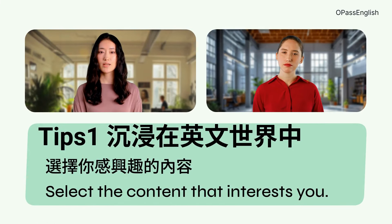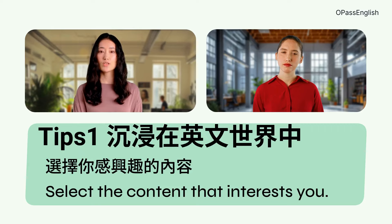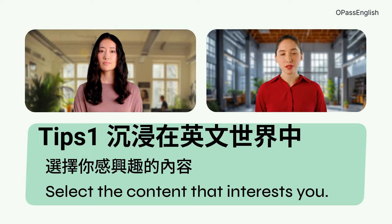Tip 1: 沉浸在英文世界中,你可以从手边容易取得的英文资源,像是YouTube、Podcast,或有声书,选择你有兴趣的内容。Immerse yourself in the English world. You can choose easily accessible English resources around you, such as YouTube, Podcasts, or Audiobooks. Select the content that interests you.